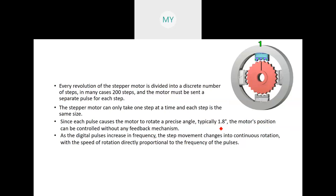The property of the stepper motor is that it can have many steps or different numbers of steps, but each step is always the same size or same angle. Since each pulse causes the motor to rotate a precise angle — typically 1.8 degrees as an example, not a fixed angle — the motor's position can be controlled without any feedback mechanism.